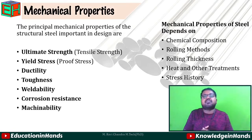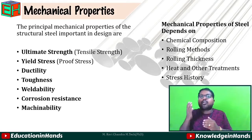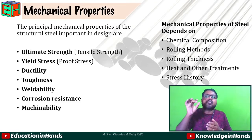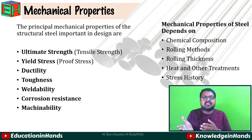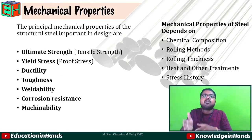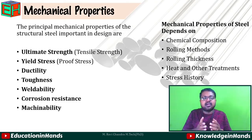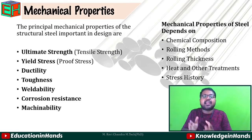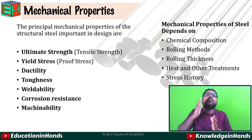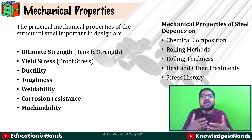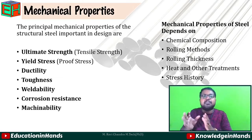These characteristics are: first, chemical composition — what is the major chemical composition of the material; rolling methods — whether it is a hot rolled or cold rolled product; rolling thickness — such as web thickness or flange thickness, which affects the mechanical properties; heat and other treatments — how the product is cooled after rolling, or how it is heated and reheated; and finally, stress history — what stresses such as tensile or compressive stresses are acting on the member. All these factors affect the mechanical properties of the material.